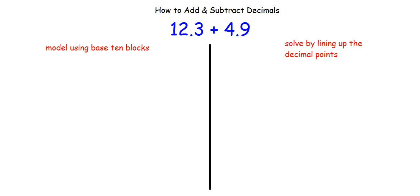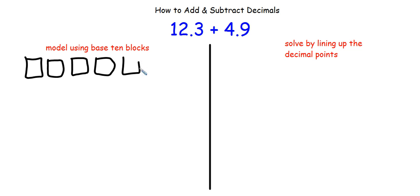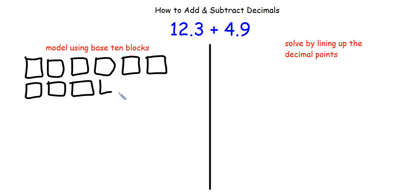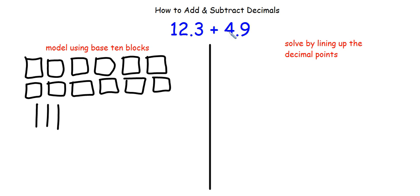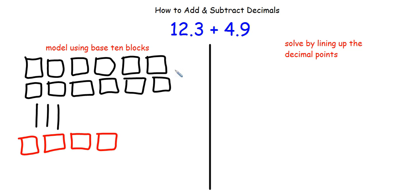Let's take a look at 12 and 3 tenths plus 4 and 9 tenths. We'll solve this using both the base 10 block model and by lining up the decimal. For 12 and 3 tenths, I draw 12 grids: 1, 2, 3, 4, 5, 6, 7, 8, 9, 10, 11, 12. Then I draw 3 tenths using 3 rods. For 4 and 9 tenths, I draw 4 grids and 9 rods: 1, 2, 3, 4, 5, 6, 7, 8, 9.